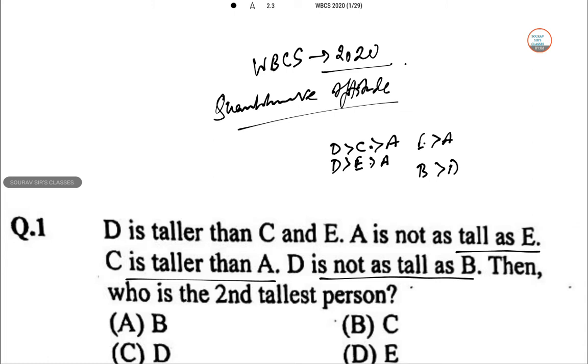So then who is the second tallest person? We will put B here. So B, D, C, A and D, E, A. If we consider both then obviously tallest is B, second tallest is D. So option number C is correct. Next question.